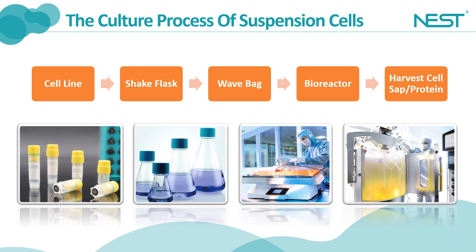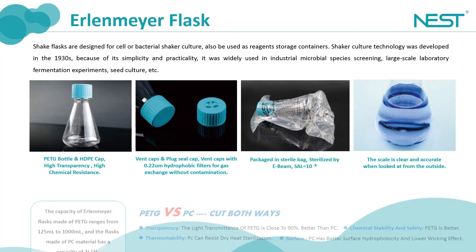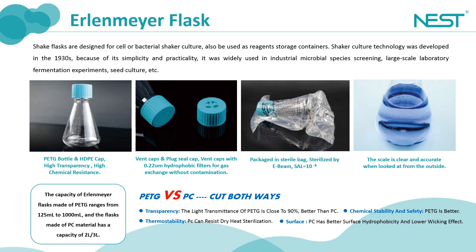The theme today is the introduction of shake flasks for cell culture. There are two kinds of Nest shake flasks: Erlenmeyer flask and high-efficiency Erlenmeyer flask. There are two kinds of raw materials for conical shake flasks: PC and PETG. They both have advantages and disadvantages, and we need to consider which one has better culture performance and how to make recommendations to clients.